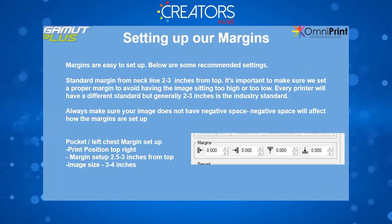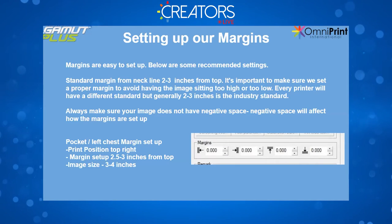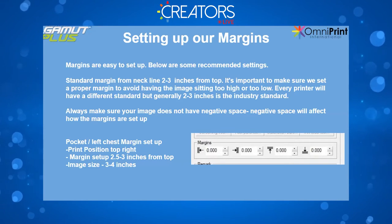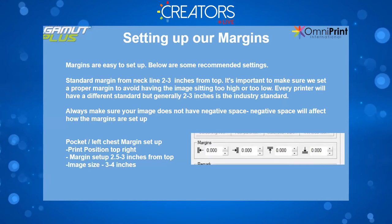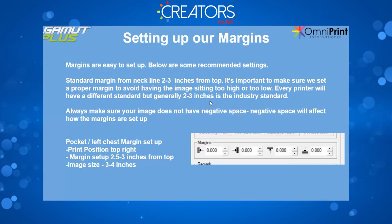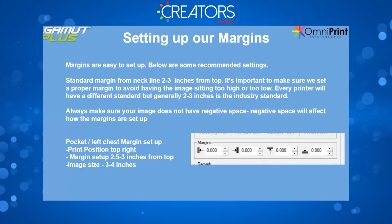The margins — margins are easy to set up. The standard margin from the neckline is about two to three inches. Every printer has a different margin line — some people use inches, a lot of screen printers use their fingers, like four fingers from the top. Generally about two or three inches from the top is what I like to set. You obviously don't want your image printing too high or too low. Always make sure your images do not have negative space — a lot of blank space around your image will affect how the margins are set up, so make sure you crop your images in Photoshop or in the RIP.